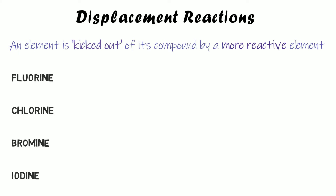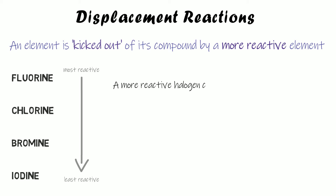We're going to focus on the group 7 elements: fluorine, chlorine, bromine and iodine, otherwise known as the halogens. Now these have different reactivities. As you go down the group they get less reactive, so fluorine is the most reactive and iodine is the least reactive. This is important for deciding whether a displacement reaction can occur, because a more reactive halogen can displace a less reactive halogen, but a less reactive one wouldn't be able to displace a more reactive one.